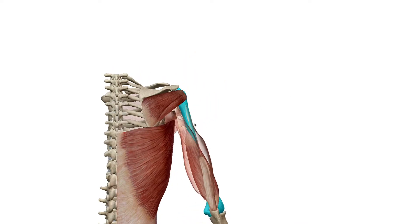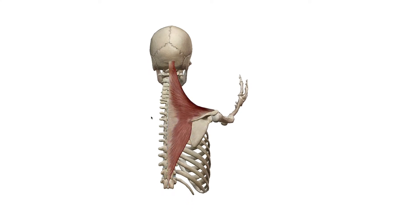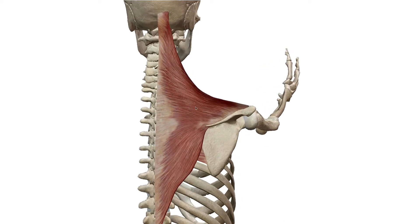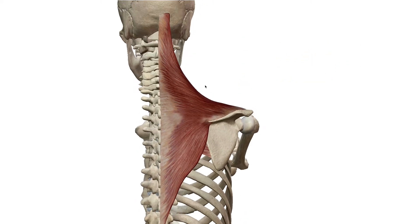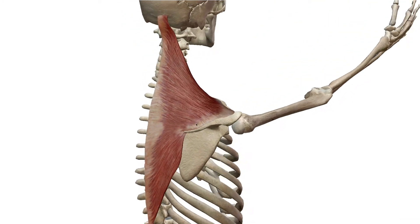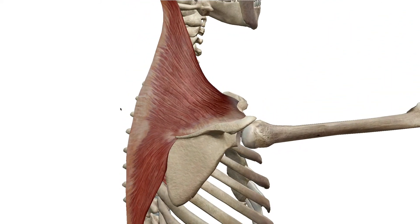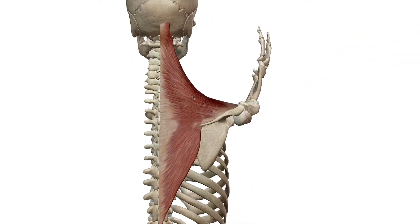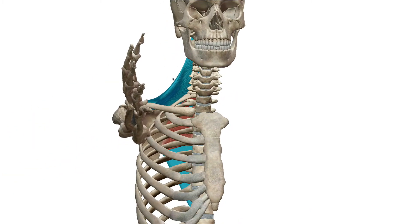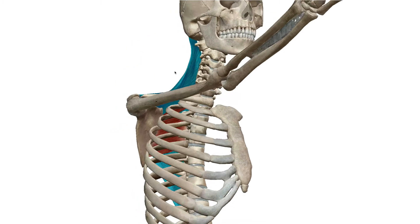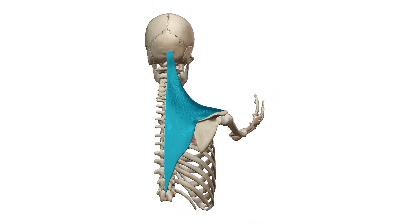Now let's look at the trapezius muscle, which is also a somewhat complicated muscle. In the exercise and fitness world, the trapezius muscle is typically broken down into three regions. It's a large muscle — sometimes you see athletes like CrossFit competitors with large traps that stick out halfway up their neck. These trapezius muscles running down the back are typically broken up into upper, middle, and lower regions.